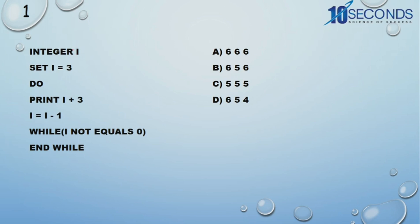See here: integer i — don't confuse it as 1. So memory will be allocated to i, and set i equal to 3, means initialize i with the number 3. Do — so it is something like a do loop. So print i plus 3. Here most students modify i itself, but try to understand, it is print — we are only displaying. So print i plus 3: i is 3 plus 3, that is 6. So 6 we are printing, and then i = i minus 1, so 3 will become 2.